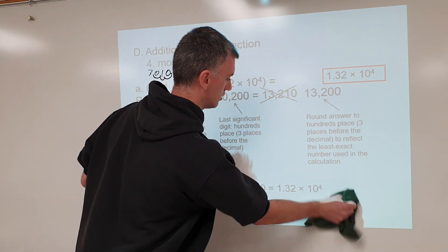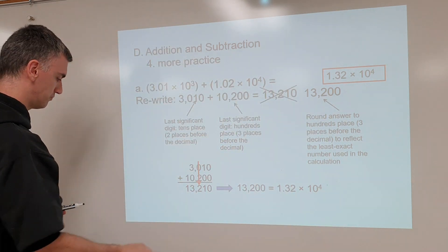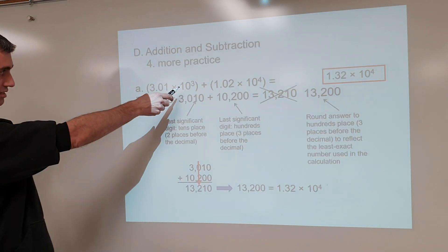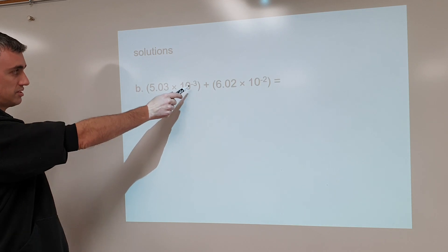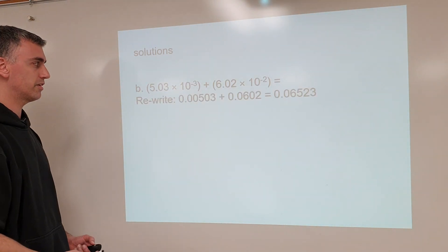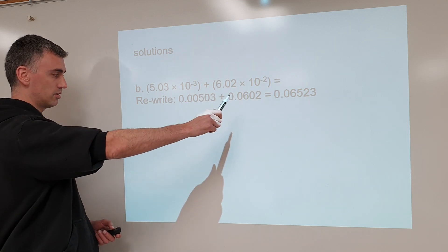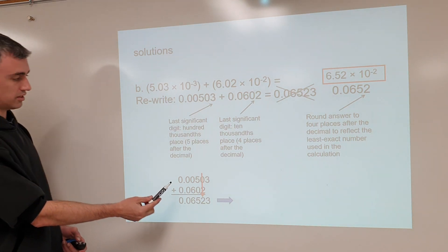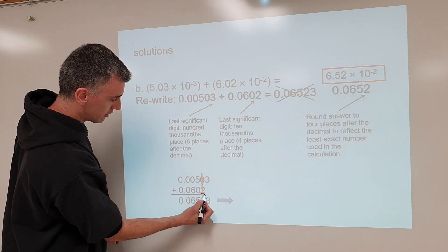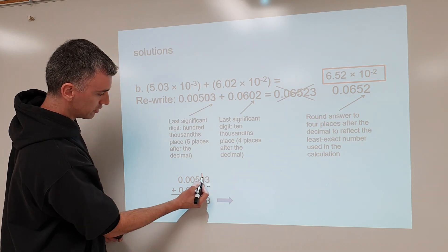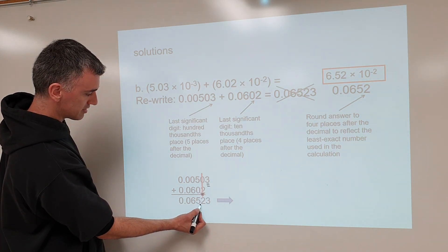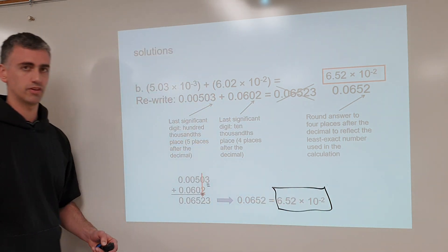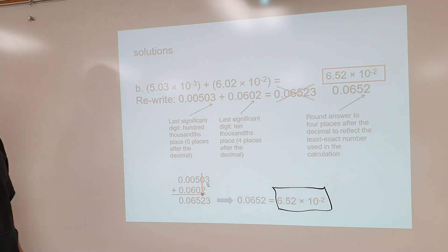Other examples work the same way. A positive exponent means a large number; a negative exponent means a small number. It doesn't matter — convert to a regular number, find the answer, stack them to identify the last significant figures, draw the arrow, and round. In this example the arrow points to round to 0.60652, which converts to the appropriate scientific notation. Always box your answer.